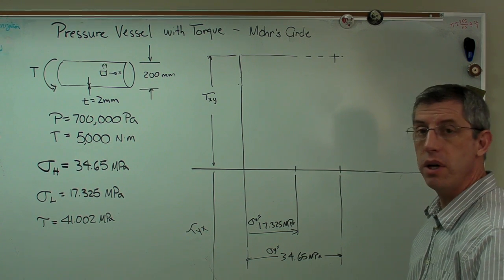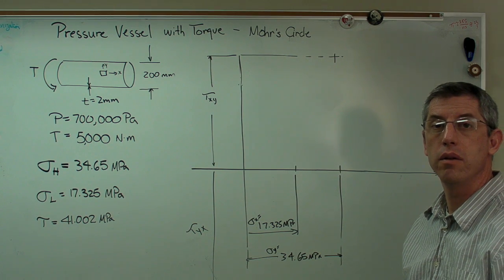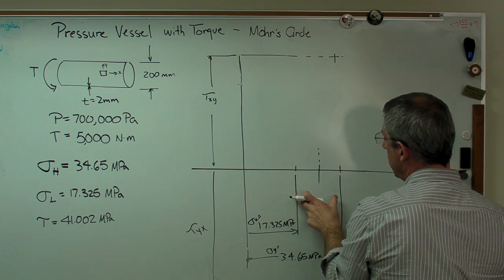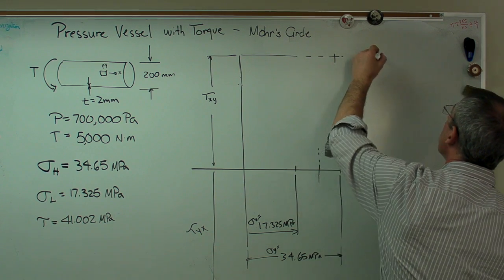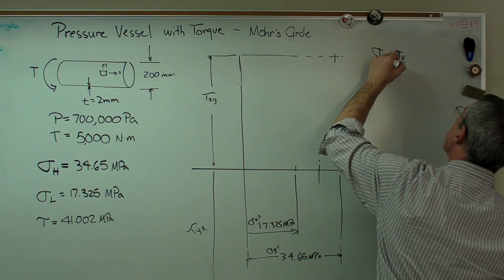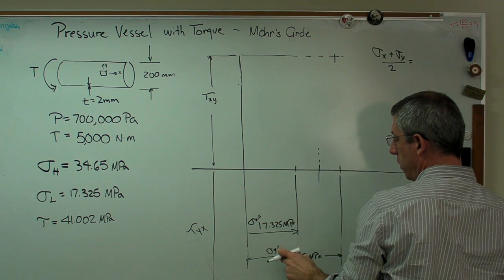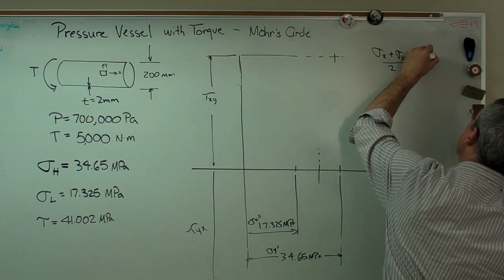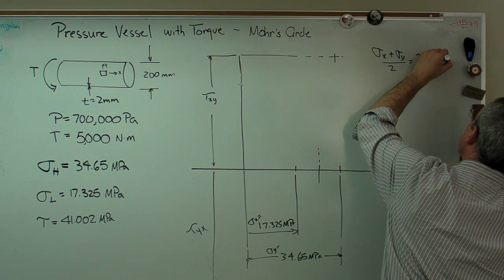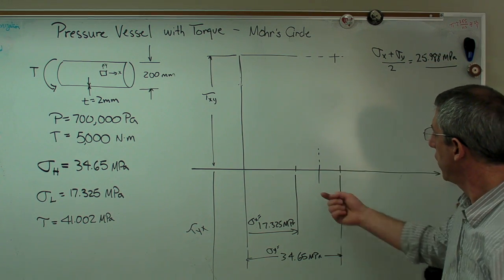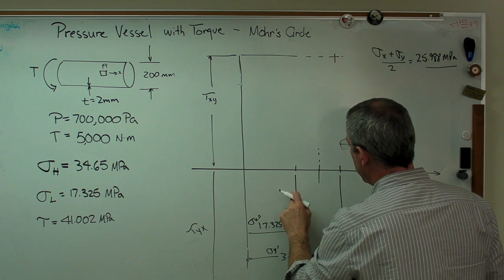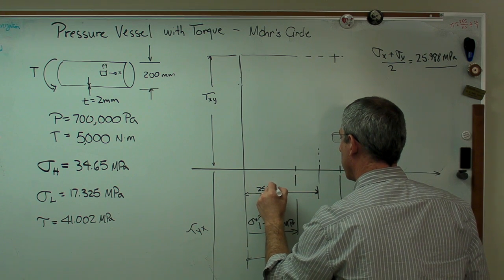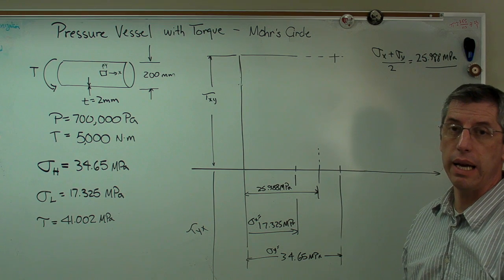Now, the next thing I'm going to need to know is where the mean stress is. I need to know where these two points are going to cross. The mean stress is the average of sigma x and sigma y. So sigma x plus sigma y over 2 is 17.325 plus 34.65 divided by 2. And that turns out to be 25.988. So there we have it. So that's this distance right here. 25.988 megapascals.